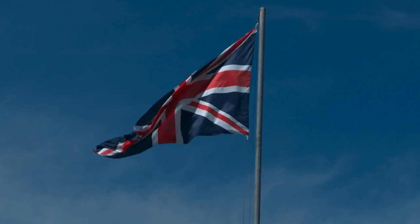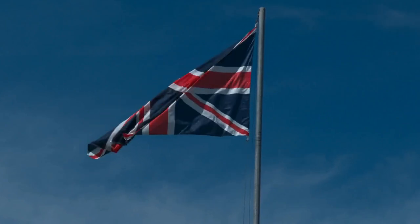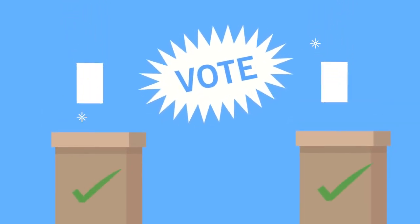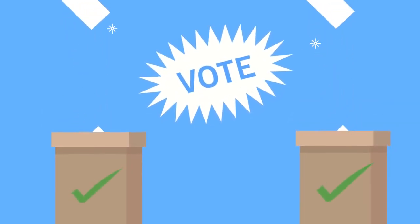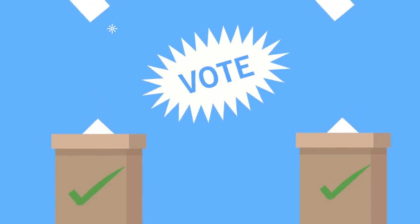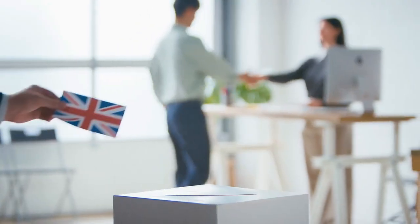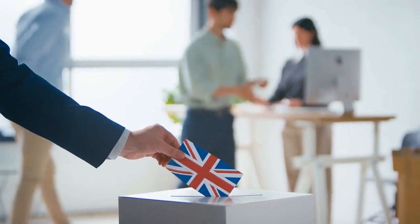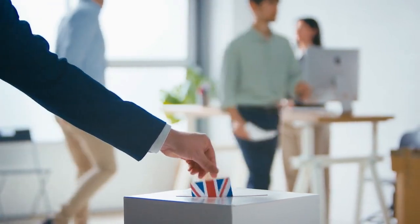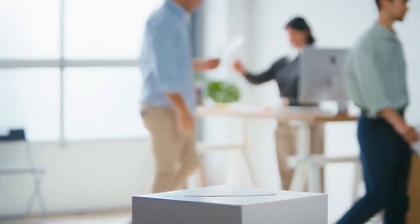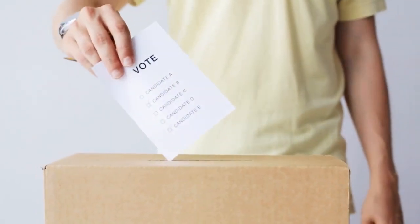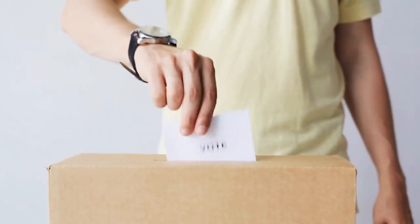Elections are a crucial part of UK democracy. General elections are held at least every five years, but they can happen sooner if Parliament is dissolved. During an election, citizens over the age of 18 who are registered to vote can go to a polling station to cast their ballot. Voting is a way for citizens to have a say in who represents them and how the country is run.